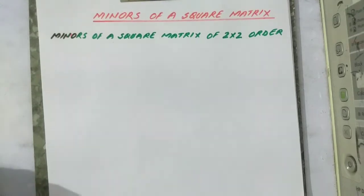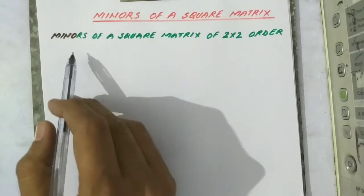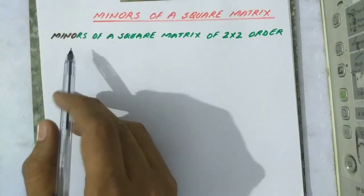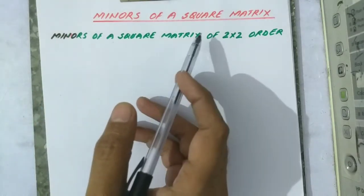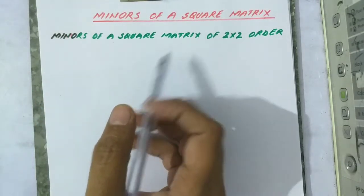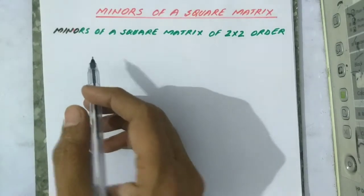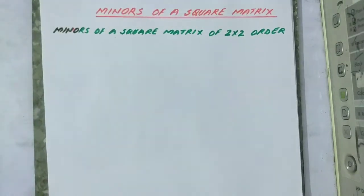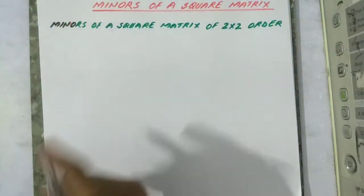Today in this video, I am going to explain the concept of minor of a square matrix. I am going to start the discussion of minors of a square matrix of 2 by 2 order — that means, what is the way to find minors of a square matrix of 2 by 2 order.